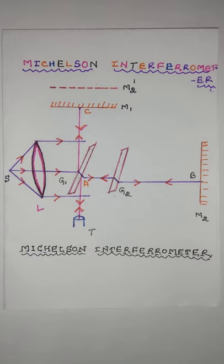The path difference is delta equals 2T cos R. The condition for the bright fringe is 2T cos R equals N lambda. In either case, R will be constant for given values of T, N, and lambda. The loci of maximum intensity will be concentric circles, having their centers on the perpendicular from the telescope on M1.